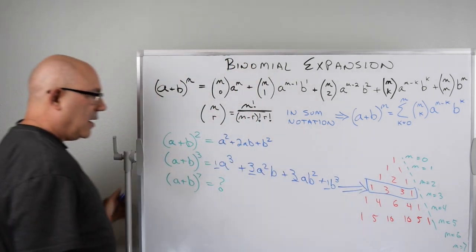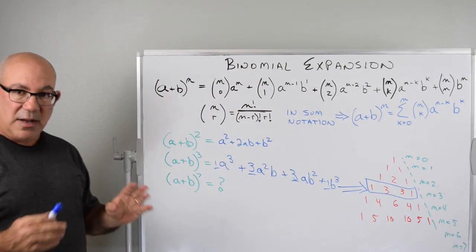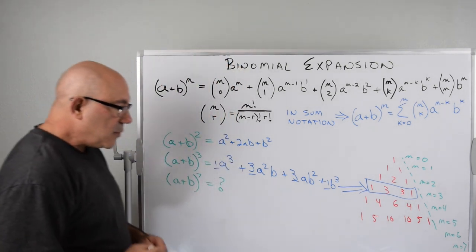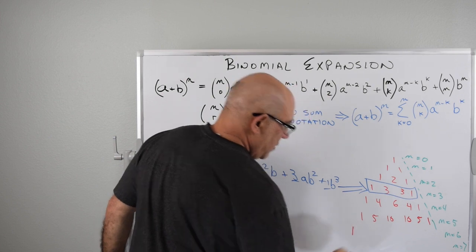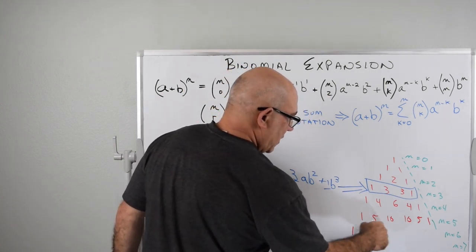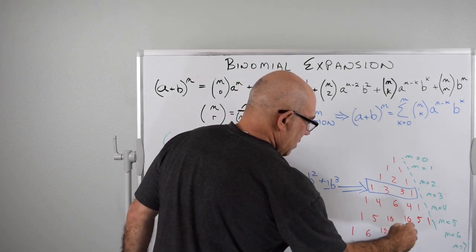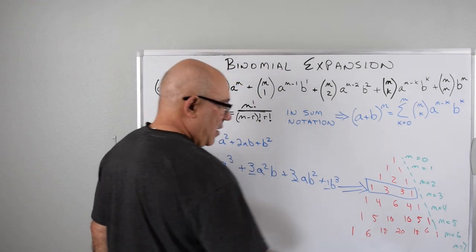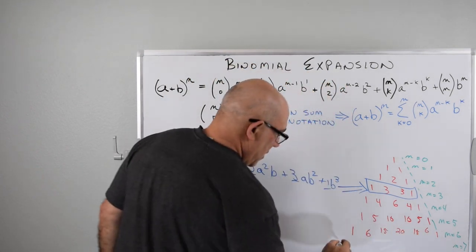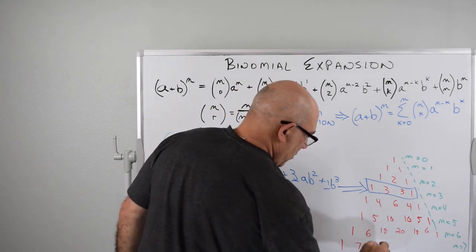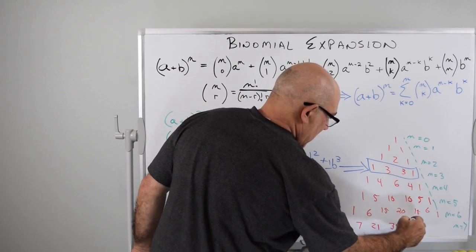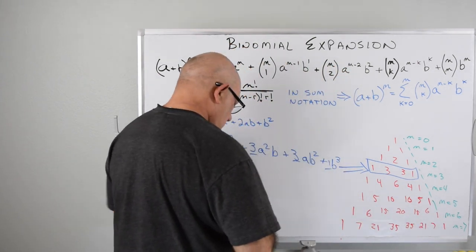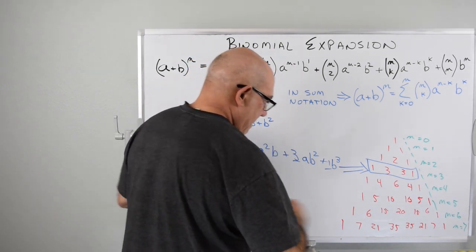Now if we want to go to the seventh power, we need to finish out Pascal's Triangle. We continue it: start with 1, add these two to get 6, add these two to get 15, add these two to get 20, add these two to get 15, add these two to get 6, then another 1. Now expand for 7: put the 1, then 7, then 21, then 35, and 35 again, and 21 again, 7, and then 1. Those are our coefficients.